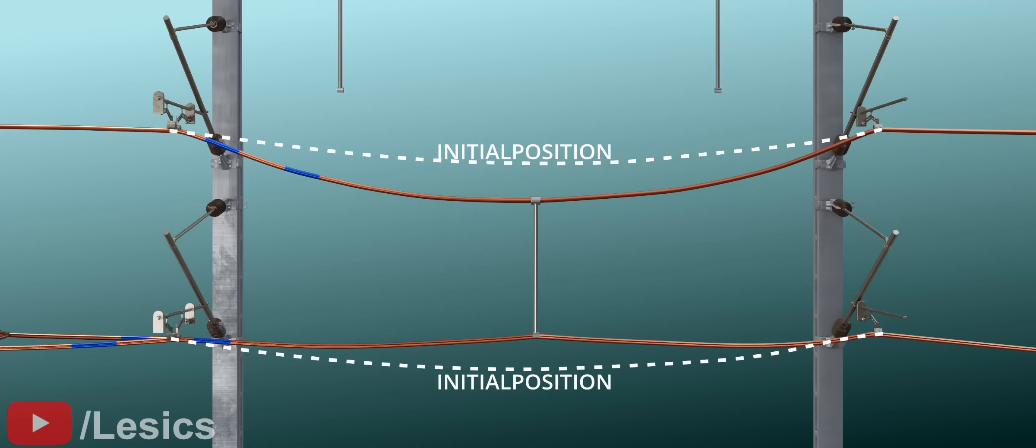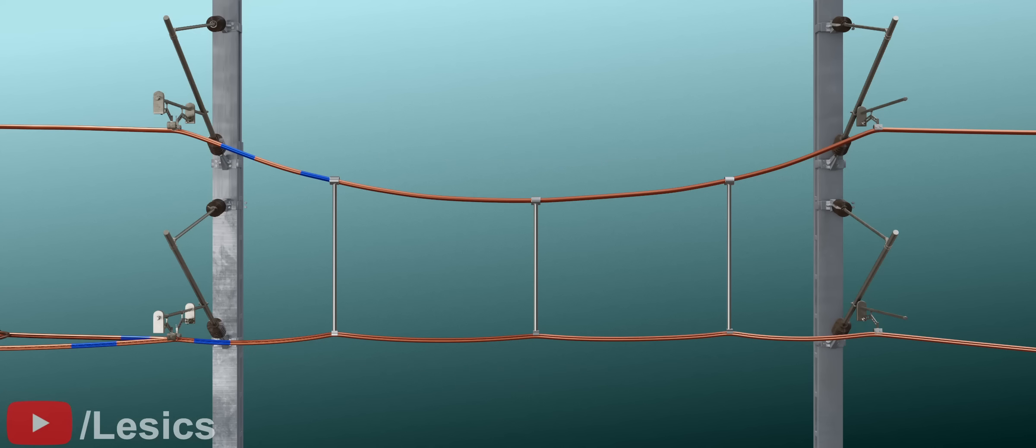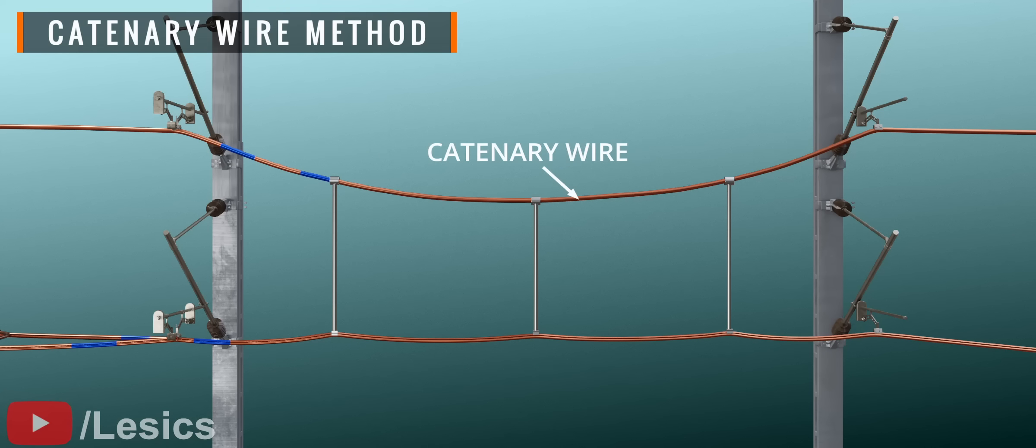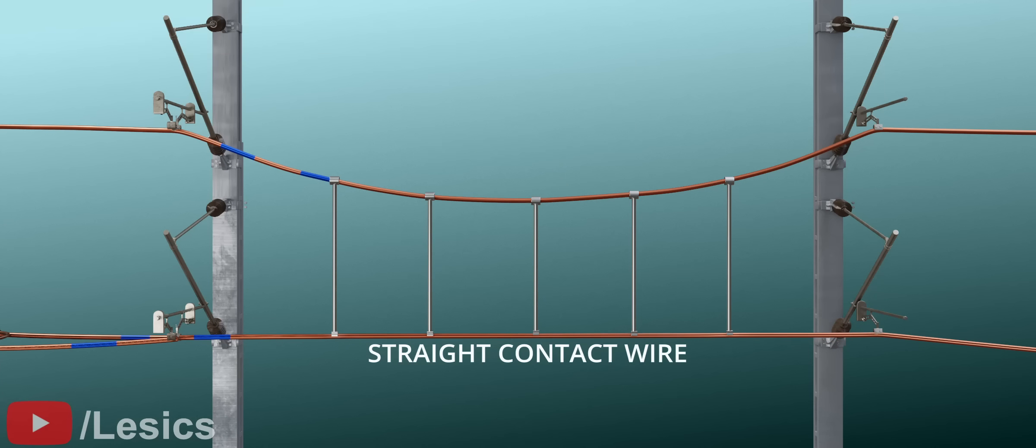In short, the sag of the upper wire will increase, while the bottom wire will have a perfect zero sag at this point. The upper wire is called catenary, and the lower wire is obviously the contact wire. By adding more droppers, the contact wire will become even straighter. These droppers also absorb vibrations arising from the interaction between the pantograph and the contact wire.